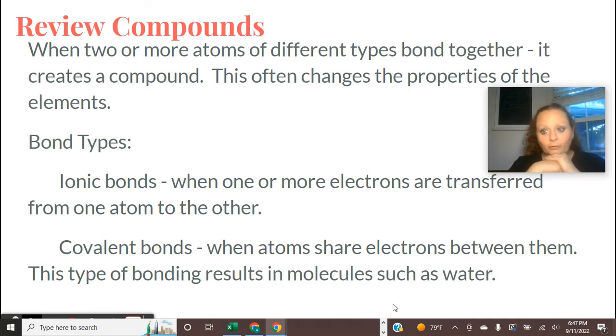Covalent bonds are more like atoms that co-parent. They're going to co-parent their electrons. So covalent bonds are when atoms are going to share the electrons between them. So sometimes the electron will hang out with one atom. Sometimes it'll be hanging out with the other atom. Again, just like co-parenting, right? So hopefully that will make sense as we move forward.